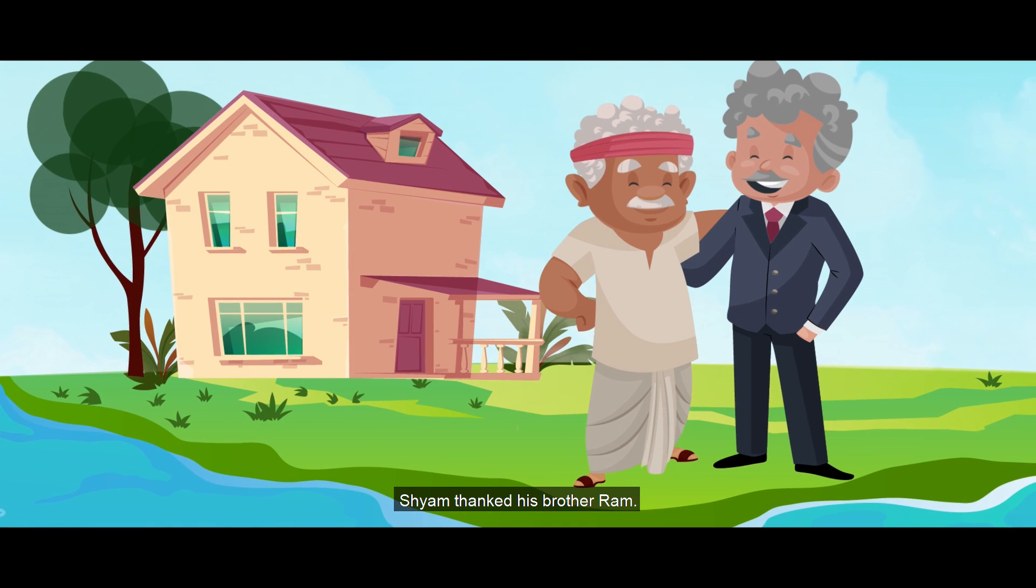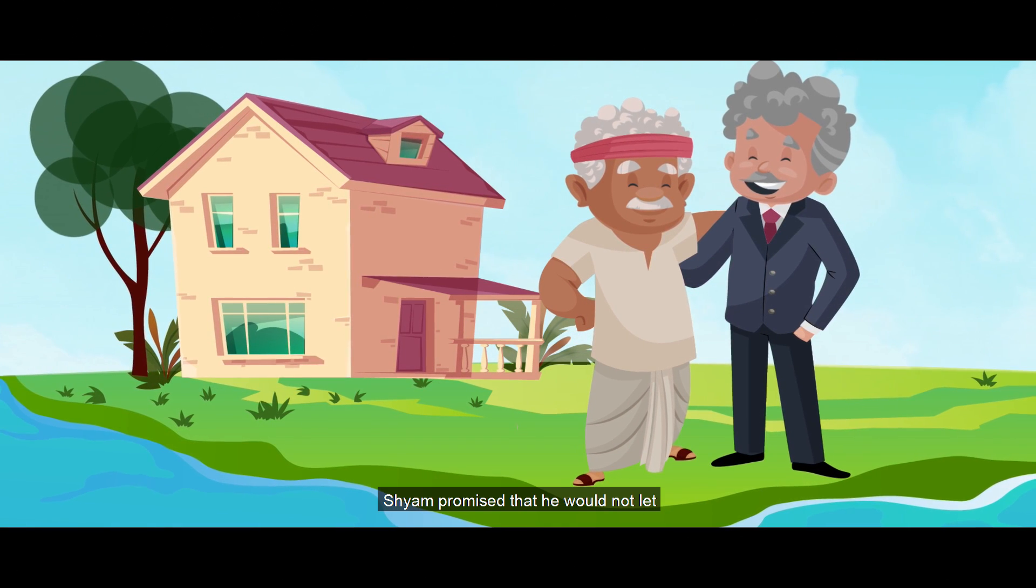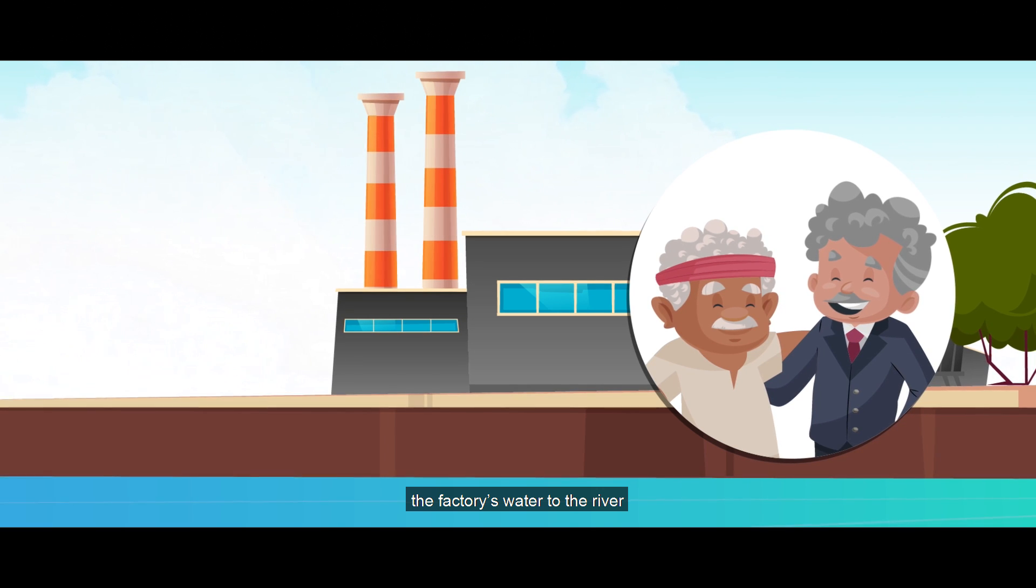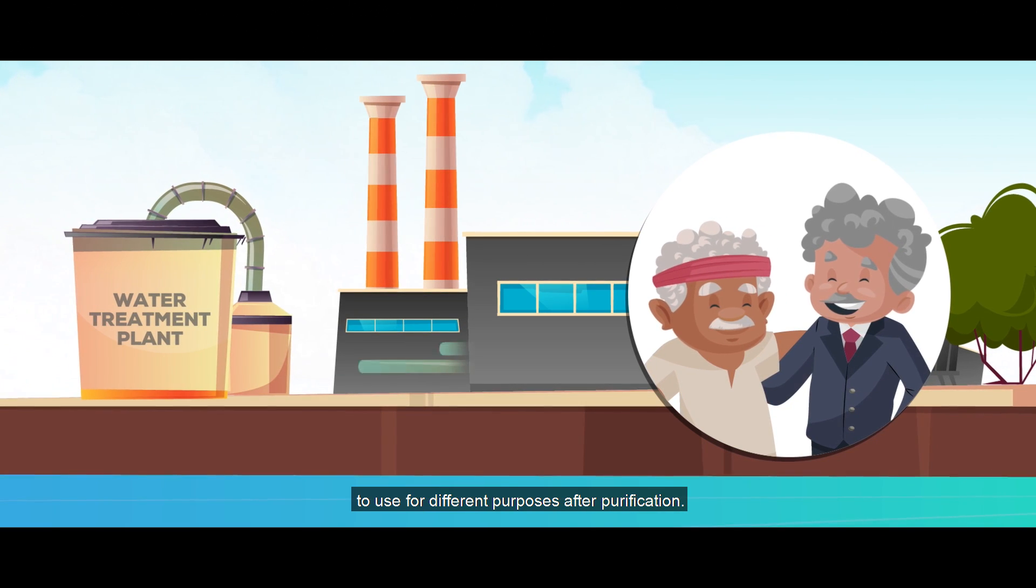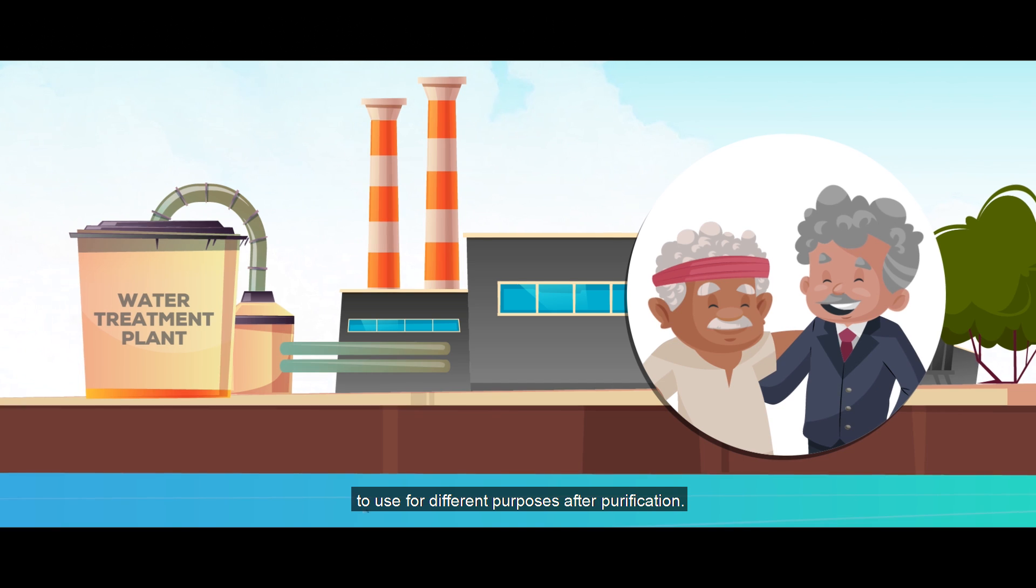Sham thanked his brother, Ram. Sham promised that he would not let the factory's water go to the river and would recycle the water to use for different purposes after purification.